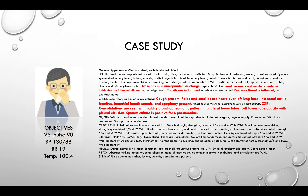On physical exam, the patient's vital signs are unremarkable except for an elevated temperature at 100.4. His nose has mild mucopurulent discharge. Nasal mucosa is erythematous. Posterior turbinates are inflamed bilaterally. Tonsils and posterior throat are inflamed. Cough is present. Rales and crackles are heard over the left lung base. There is increased tactile fremitus, bronchial breath sounds, and egophony. On chest x-ray, consolidations are seen with a patchy bronchopneumonic pattern in bilateral lower lobes. There is also a left lower lobe opacity with pleural effusion. On sputum culture, it is positive for Strep pneumo.